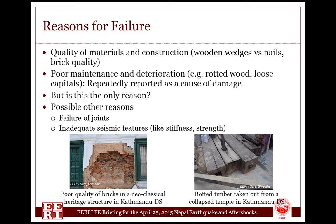Another main reason for failure is the quality of materials and construction. Some of the brick quality, especially in the neoclassical building of Gaddi Baitak in Kathmandu Darbar Square, is not so good comparatively. The outer layer of the walls has come out. Similarly, poor maintenance and deterioration is repeatedly reported as the main cause of failure. We can see some rotted timber taken out from a collapsed temple of Kathmandu Darbar Square. In some cases, loose capitals or the dowel of a half-inch timber column in stone, or the loose connection of timber column with beam, is reported to be the cause of damage. But there might also be reasons like inadequate seismic features or foundation failure. More detailed study has to be done in this aspect.